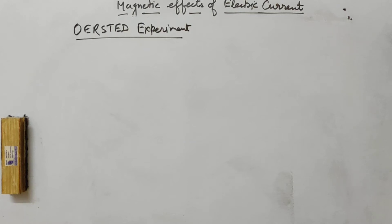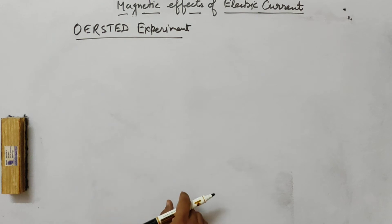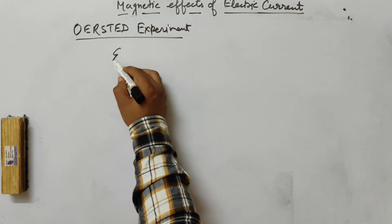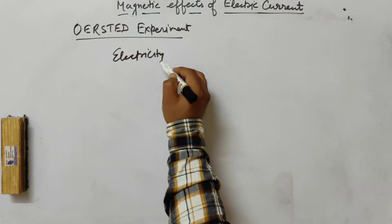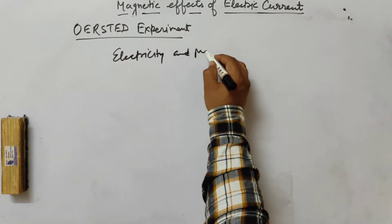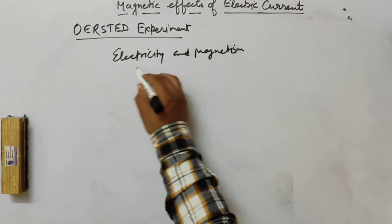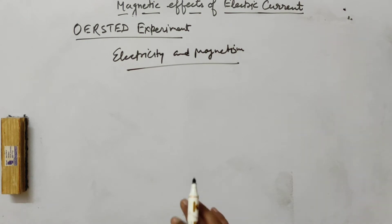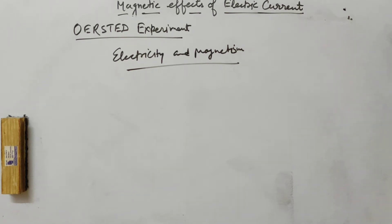Next topic we have is Oersted's Experiment. It has experimental evidence showing the relation between electricity and magnetism. Initially, it was thought there was no relation between electricity and magnetism. This was an accidental experiment — it accidentally proved that electricity and magnetism are related.